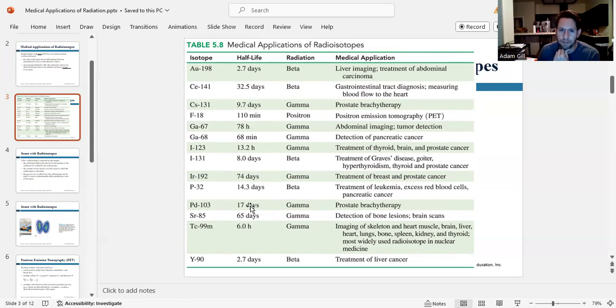Palladium-103, a half-life of 17 days. It's a gamma emitter. We use it for prostate brachytherapy. Strontium-85 has a half-life of 65 days. It's a gamma emitter. We use it to detect bone lesions and for brain scans.